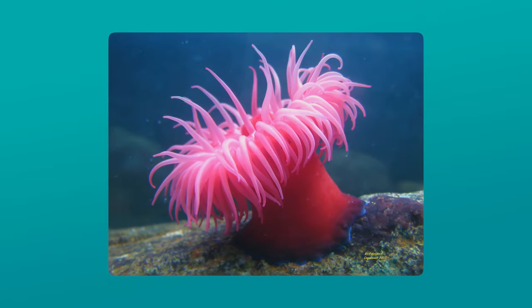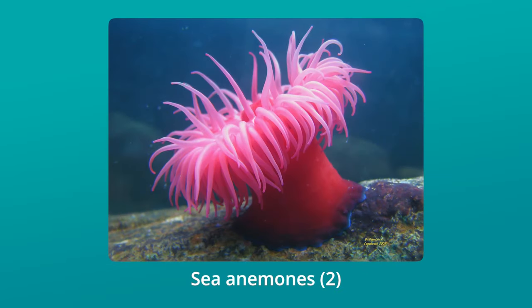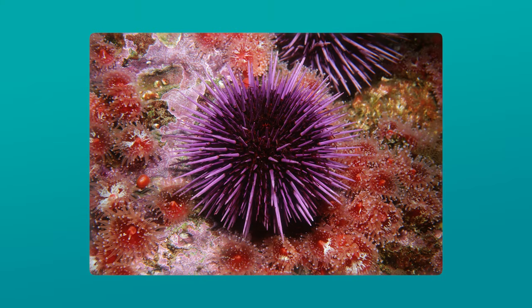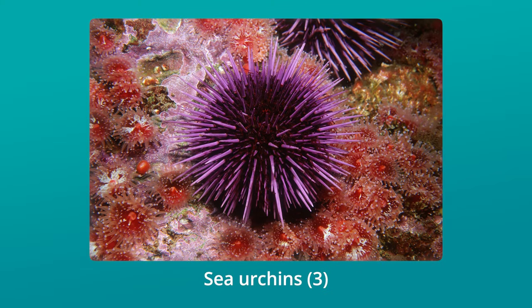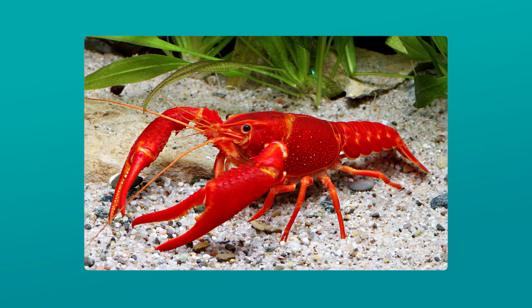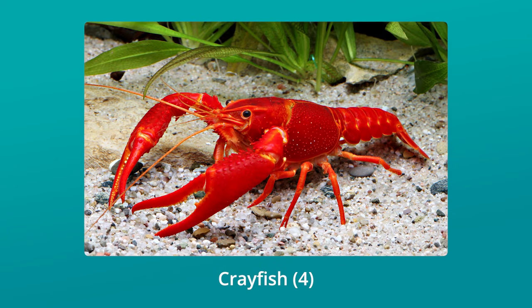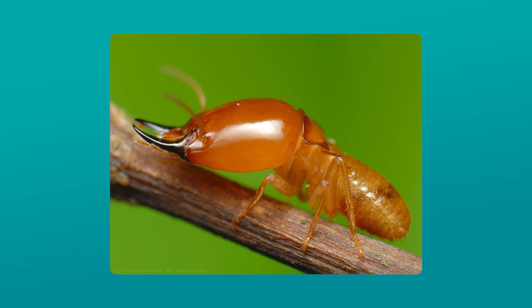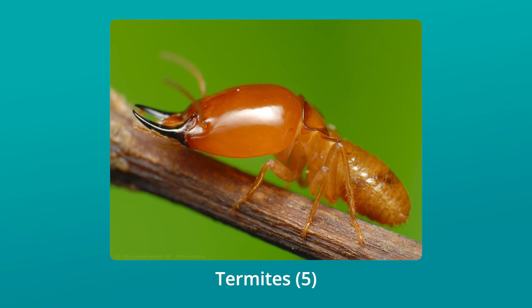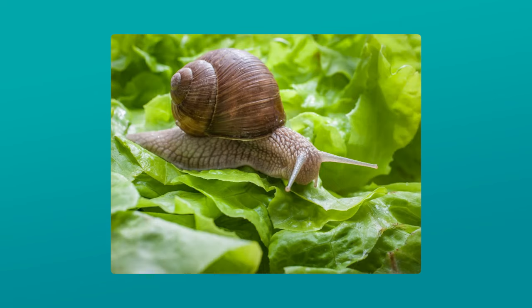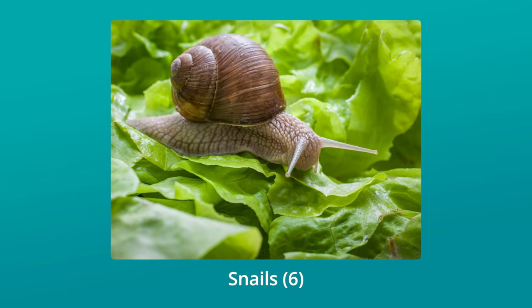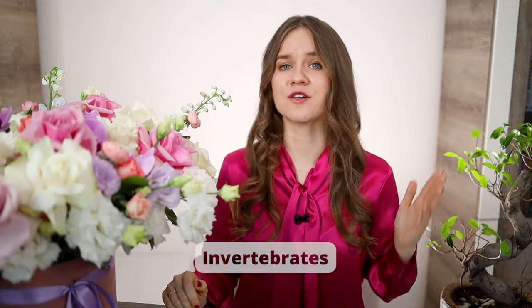Some examples of invertebrates are – time for your first vocabulary test. Look at the pictures and name the animals you see. Sea anemones, sea urchins, crayfish, termites, snails. All of these animals are invertebrates.